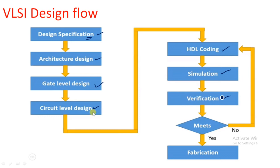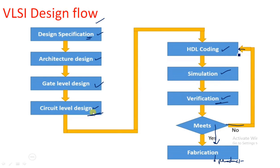Another step is verification. Verification is nothing but once the complete structure is ready and meeting the requirements, we confirm the circuit meets the original requirements, then go for fabrication. Fabrication is the outcome or product of the design that the market is looking for. If after verification it does not meet the original requirement, then we go back to the HDL coding, make changes in the code, and this loop is continuously repeated until we get the required specified output.